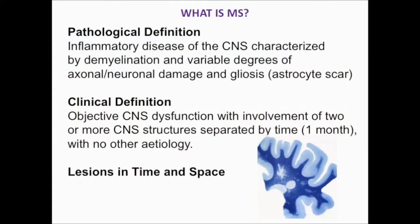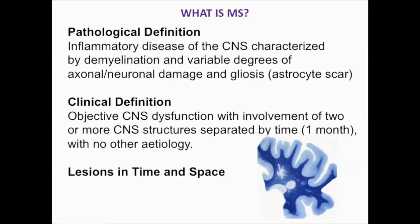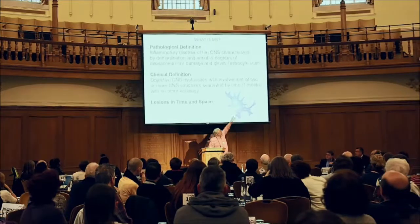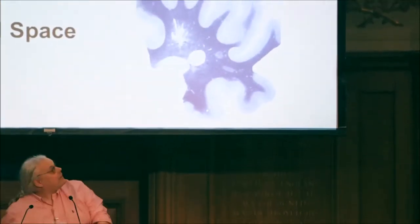Pathologically, MS is an inflammatory disease of the central nervous system causing demyelination, with evidence of axon damage and gliosis — a scar formed by the astrocytes. Clinically, we have to see episodes of neurological dysfunction in time, so the diagnosis of MS is lesions in time and space. We can see that here: lesions in different locations of different ages, allowing us to start making a diagnosis of MS.